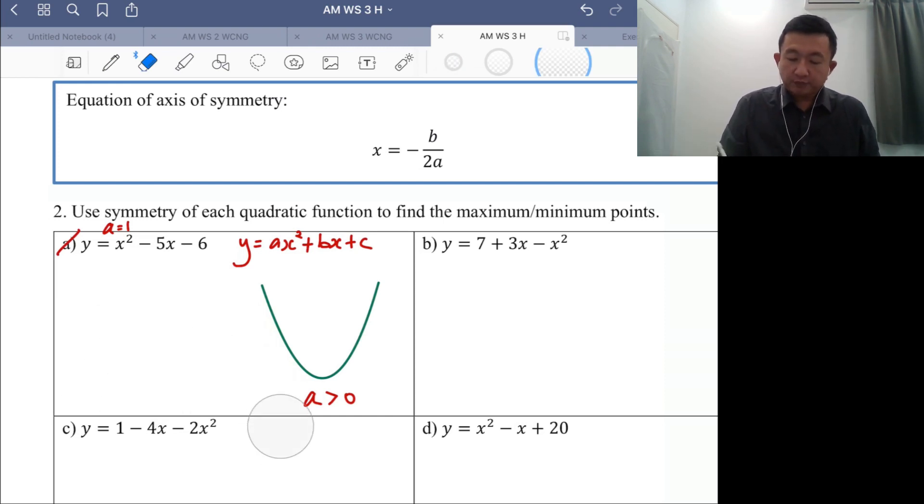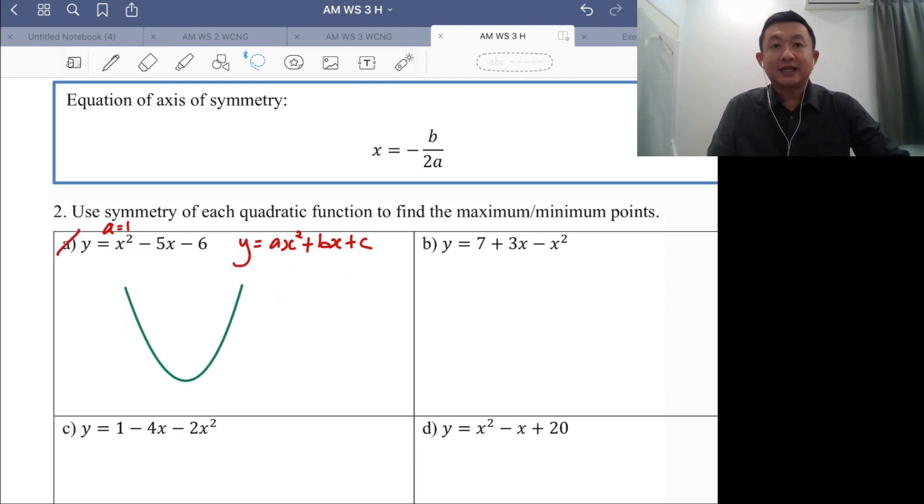For a u-shift graph or an n-shift graph you all know that there will be a turning point. In this case this will be a minimum point for a u-shift graph. And for this minimum point it has its x and y value. And I want you to know when we include the idea of axis of symmetry.